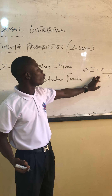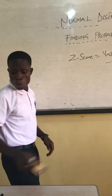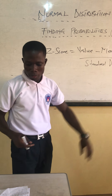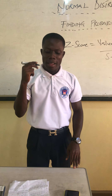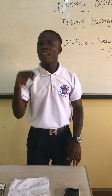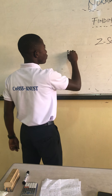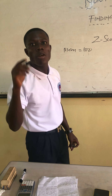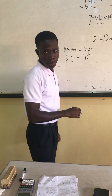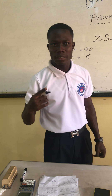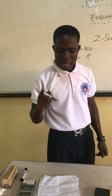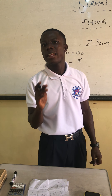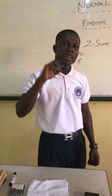So now let's try an example on how to find Z. I have an example here — I will read it out, we will listen, then identify the variables, and then solve for Z. An IQ score is normally distributed with a mean of 100 and a standard deviation of 15. Find the probability that a randomly selected person has an IQ score greater than 120.